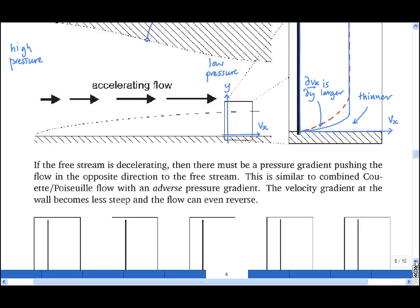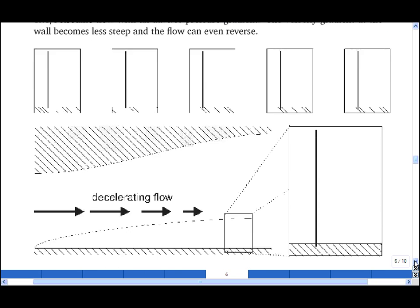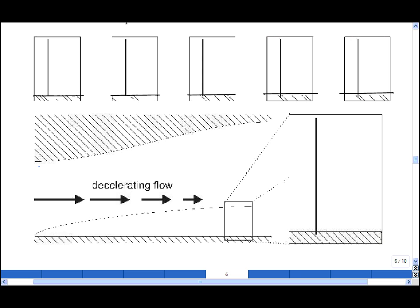If instead we have a pressure gradient pushing in the other direction, that is in the opposite direction to the mean flow, we get a very different type of behavior. The flow is decelerating, which means that we have a low pressure upstream on the left and a high pressure downstream. So the force due to the pressure gradient is in the opposite direction to the flow.